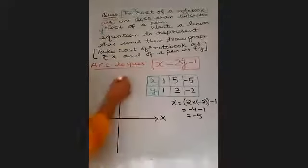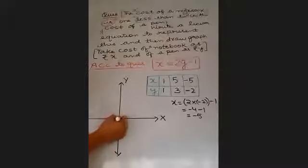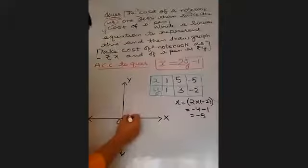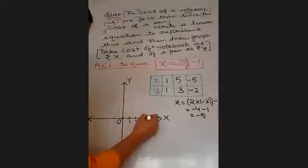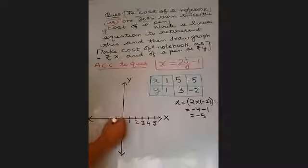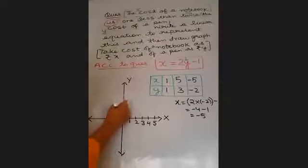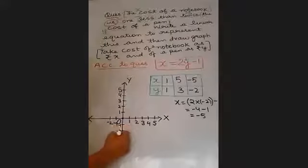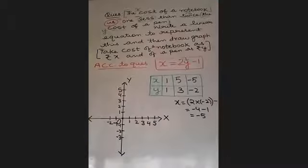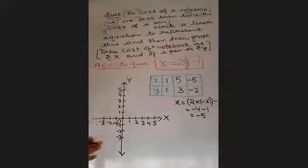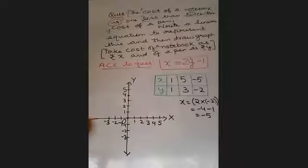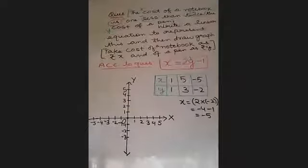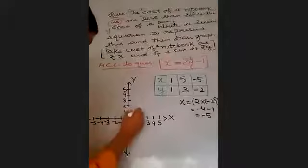Now let us plot the graph. X, Y. Basic things done. After that, numbering it: 1, 2, 3, 4, 5, minus 1, minus 2, 1, 2, 3. Let's plot the points.